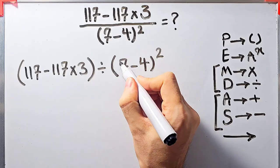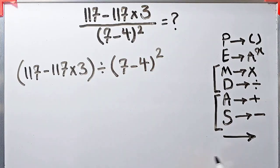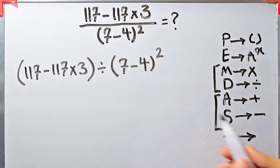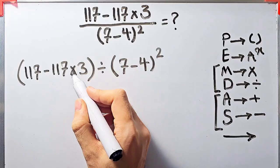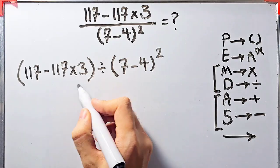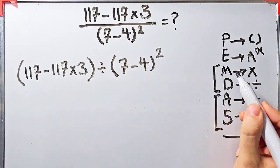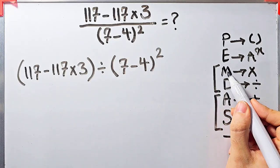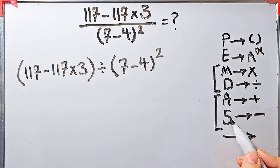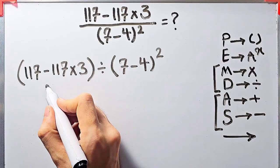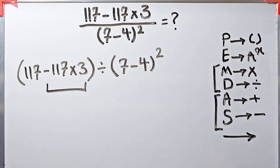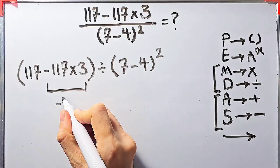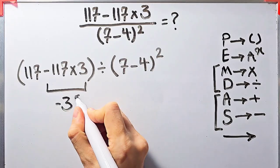According to the PEMDAS rule, first we simplify the parentheses. Inside the first parentheses we have subtraction and multiplication. First we simplify the multiplication because multiplication has higher priority than subtraction. Negative 117 times 3 equals negative 351.